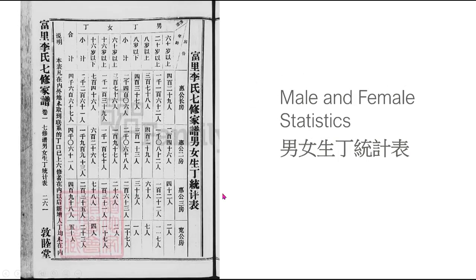Next we have the male and female statistics table. Here we see the locality, the family name, and columns for male and female — again divided by first wife, second wife, third wife, and siblings.